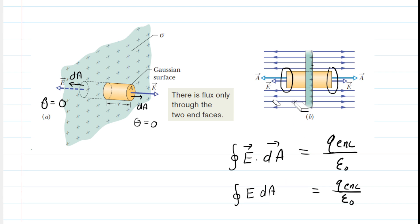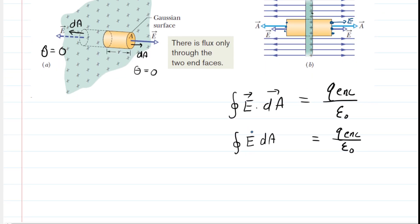The electric field is going to be a constant value everywhere on each end cap. For example, this electric field vector pointing to the right has the same magnitude as any other vector on the end cap, because all points on the Gaussian surface are the same distance from the sheet of charge, and the charge is uniformly distributed. So the electric field on every point of our end cap has a constant value — same on the left end cap as well. Because the electric field has a constant magnitude, we can factor it out of the integral.